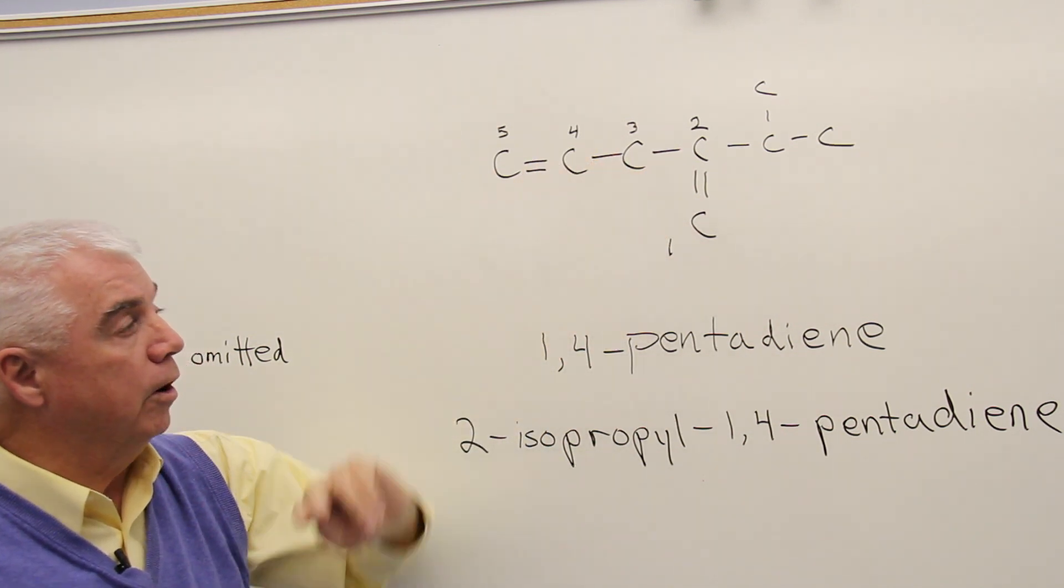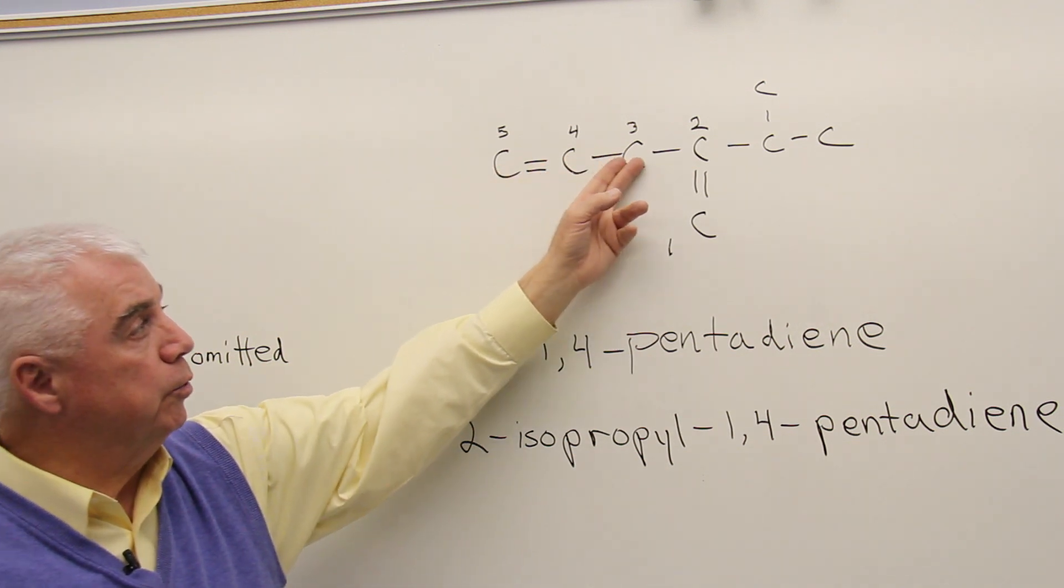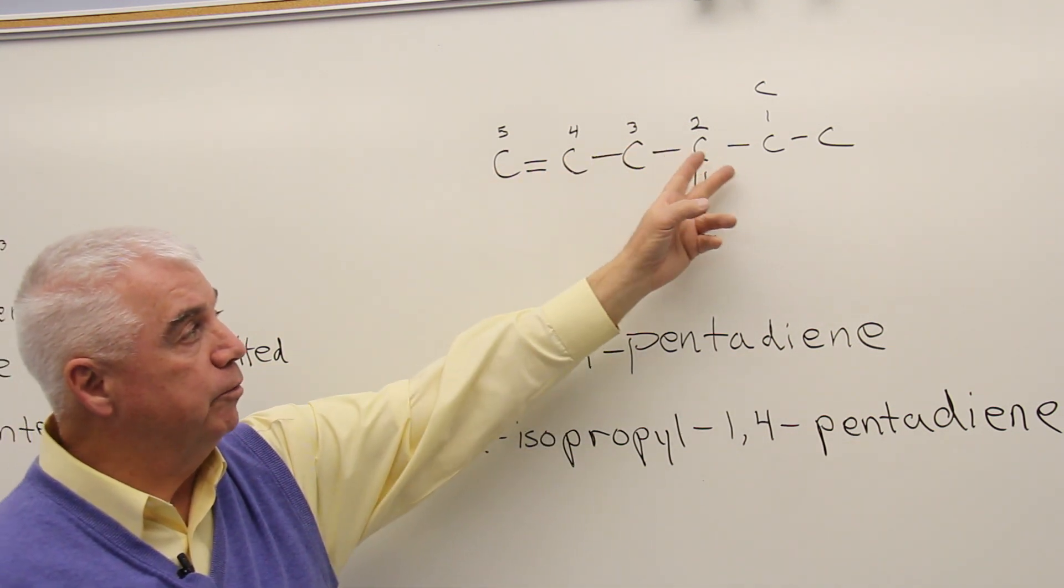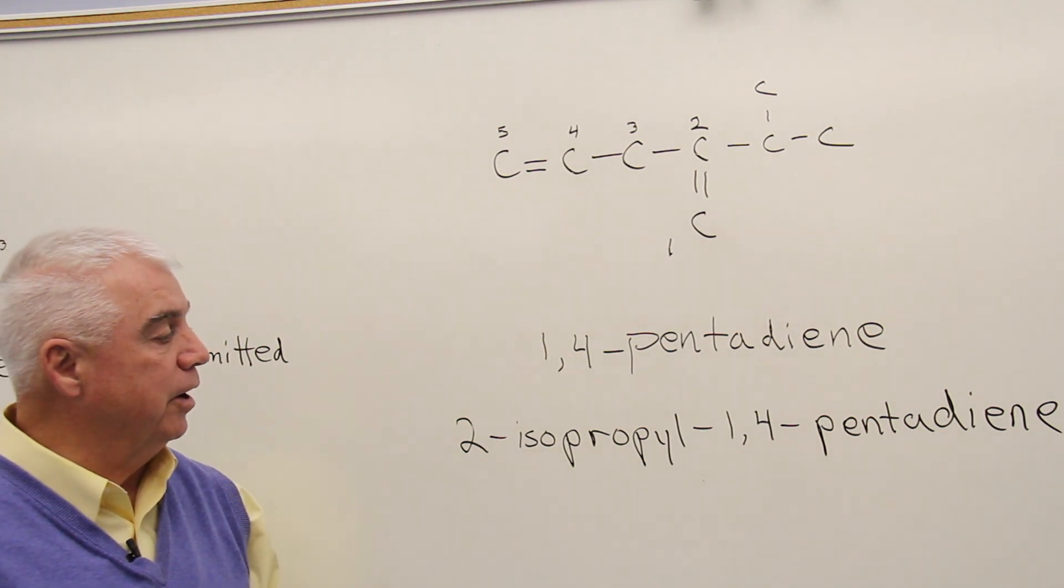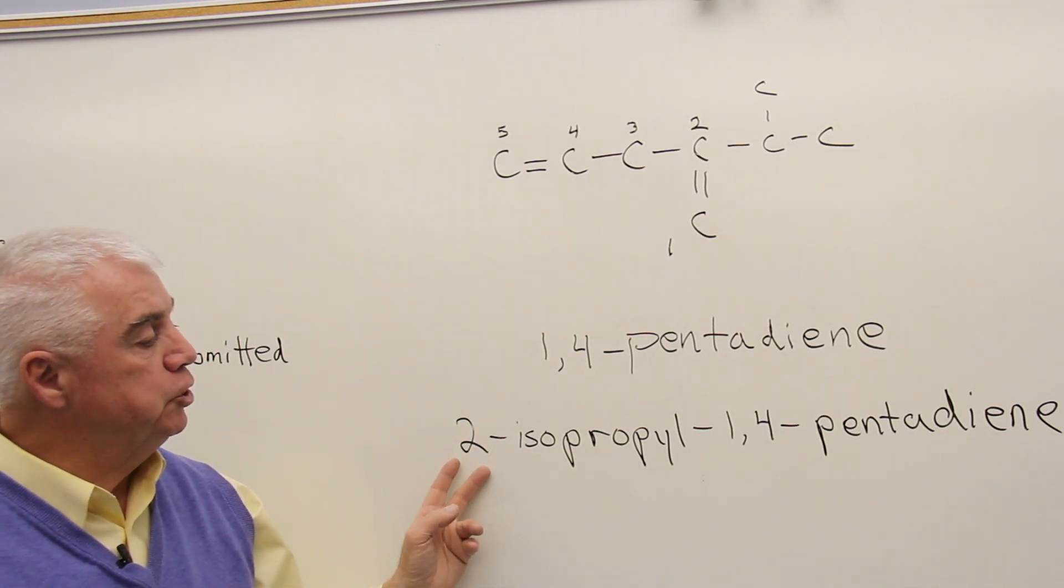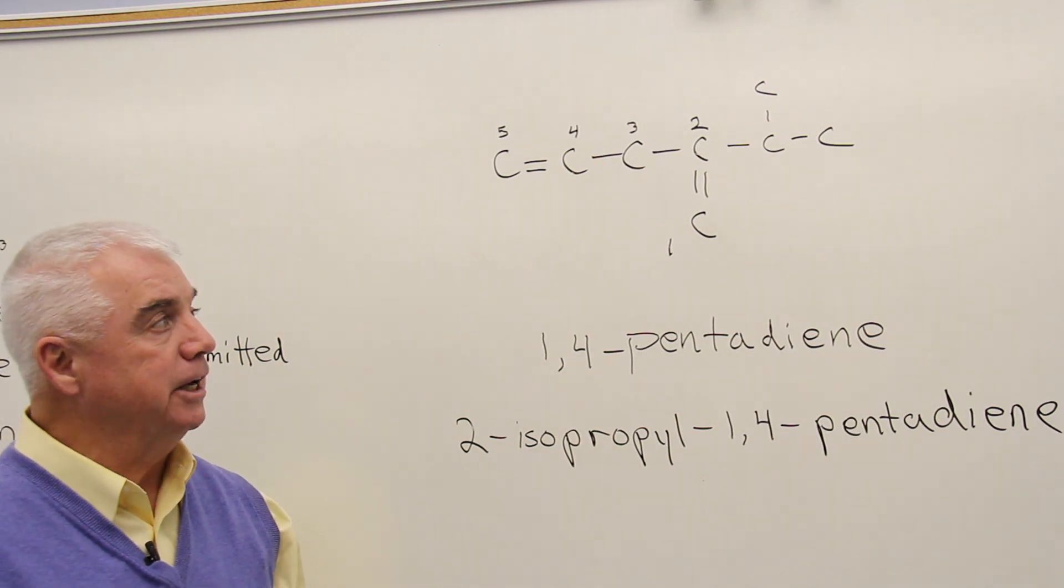We'd number it down here so that we have double bonds at positions one and four. One, two, three, four. If I had numbered it the other way, one, two, three, four, we would have gotten a little higher number for this group that's attached out there. So the correct name is 2-isopropyl-1,4-pentadiene.